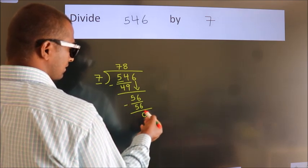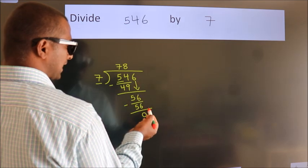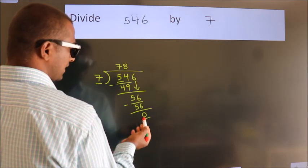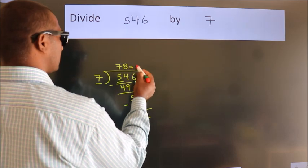After this, no more numbers to bring down. And we got remainder 0. So this is our quotient.